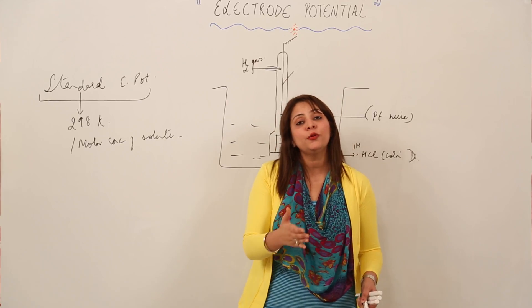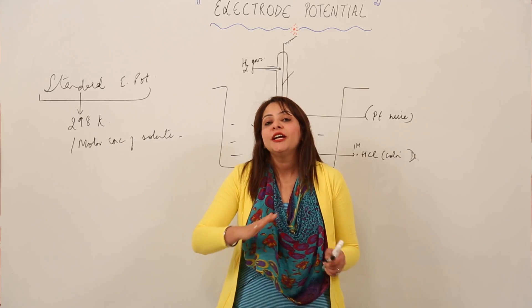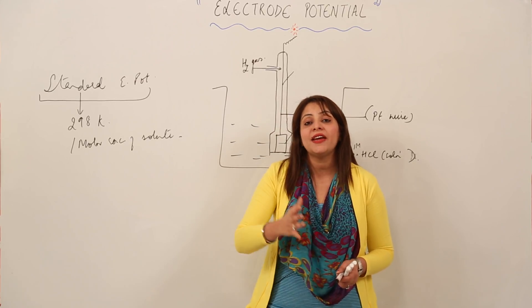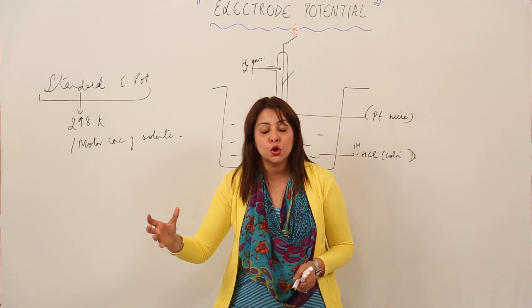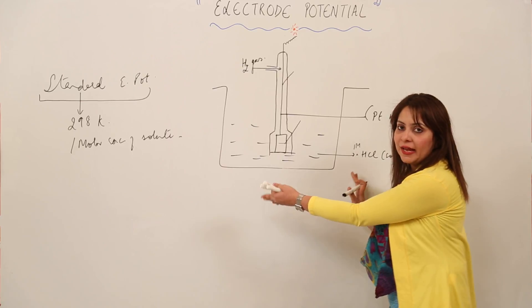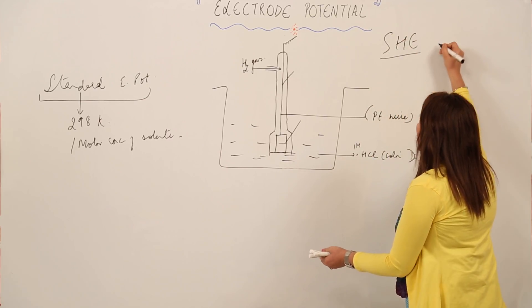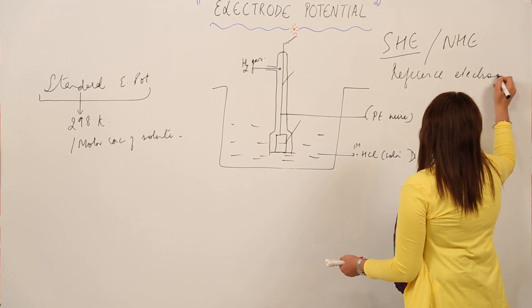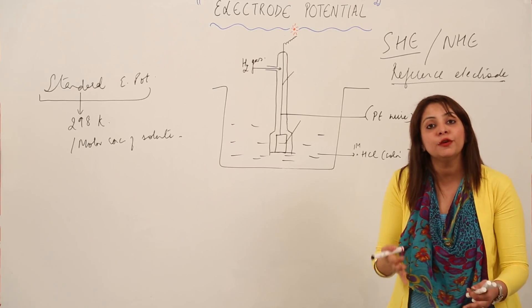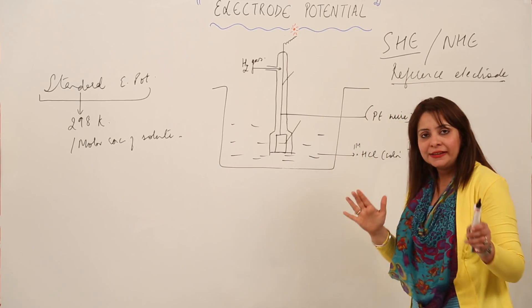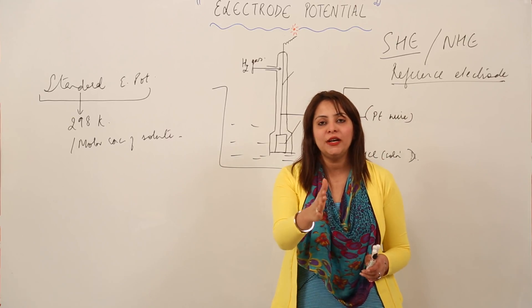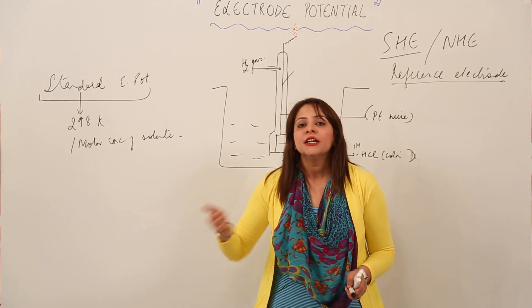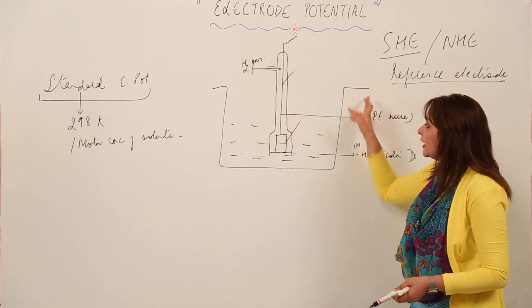To calculate the electrode potential value, we need a reference electrode. That reference electrode is the Standard Hydrogen Electrode, or SHE — also called NHE. Using SHE, we can calculate the electrode potential of any cell we wish to study.